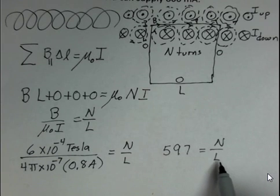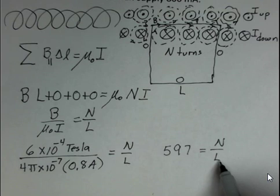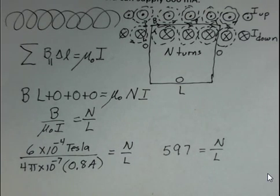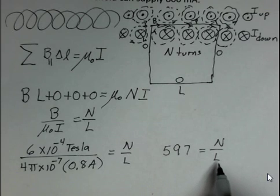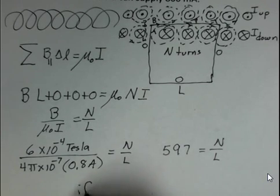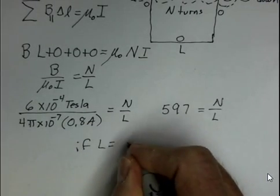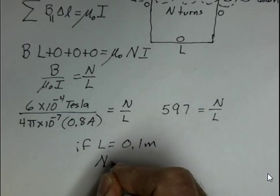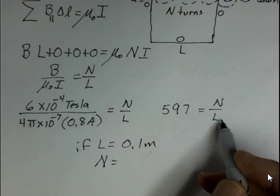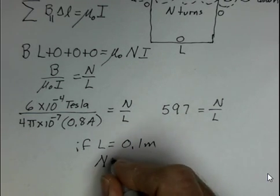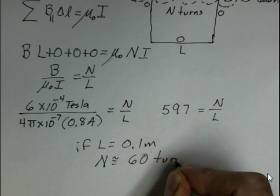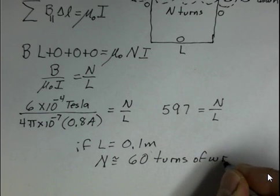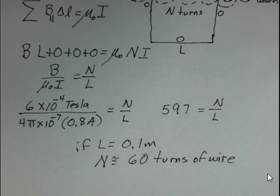This would be the number of turns per meter. N is the number of turns of wire that we have. L is the length in meters, standard metric units. So 597 turns per meter. Well, let's suppose that we build a solenoid where L is 0.1 meters. Then what do you think the value of N should be? Well, I have to multiply 597 by L, so 597 times 0.1, and roughly I need 60 turns of wire over this 10 centimeter distance. And there we've designed a solenoid with a current of 800 milliamps available and a desired magnetic field of 6 times 10 to the minus 4 in the middle of the solenoid.